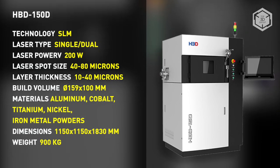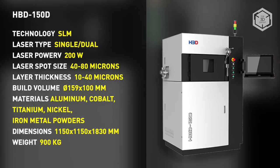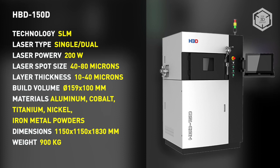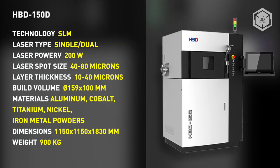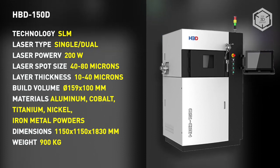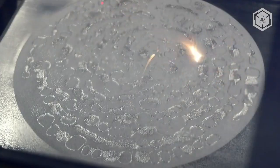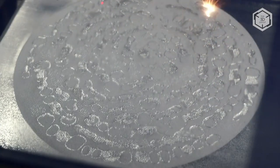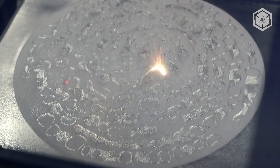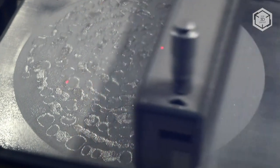The key specifications of the 150D include a cylindrical build volume of 150 by 100 millimeters, laser spot size from 40 to 80 microns, and layer height from 10 to 40 microns. The system works with titanium, aluminum, chromium cobalt, nickel alloy, as well as stainless and tool steel fine metal powders.